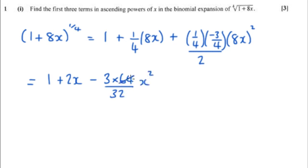Now this is going to cancel down to a 2 so we're going to end up with 1 plus 2x take away 3 times 2 which is 6x squared.